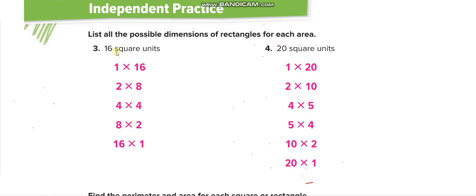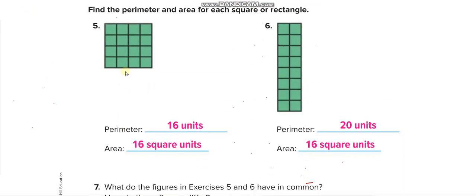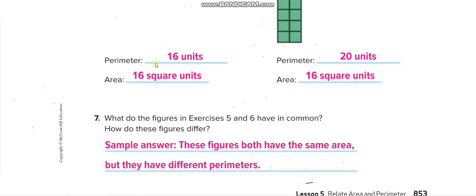For an area of 16 square units, the possibilities are: 1×16, 2×8, 4×4, 8×2, and 16×1. For 20 square units: 1×20, 2×10, 4×5, 5×4, 10×2, and 20×1. For a 4×4 square, perimeter is 4+4+4+4=16 and area is 16. For a 2×8 rectangle, perimeter is 20 and area is 16. Both have the same area but different perimeters.